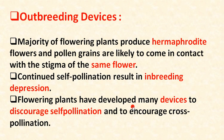Our next topic is outbreeding devices. Majority of flowering plants produce hermaphrodite flowers, and pollen grains are likely to come in contact with the stigma of the same flower, resulting in self-pollination. Continued self-pollination results in inbreeding depression. Flowering plants have developed many devices to discourage self-pollination and encourage cross-pollination.